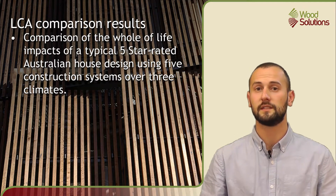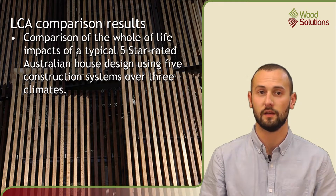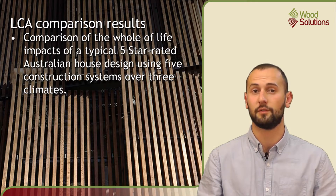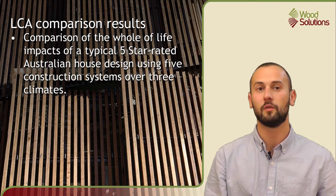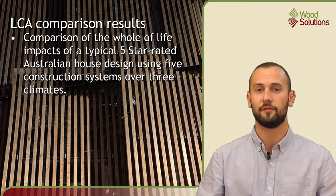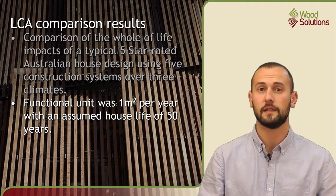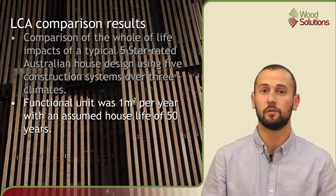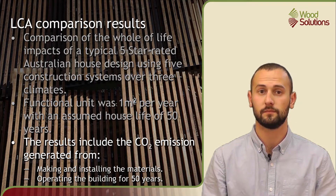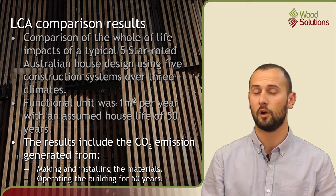Let's now look at two LCA studies and see what they can tell us about the relative performance of timber and other construction systems. The first study was conducted in 2010 and compared the whole-of-life impacts of a typical five-star rated Australian house design using five construction systems over three climates. The construction systems varied from those with very little timber to those that optimised timber use, and the climates studied were Melbourne, Sydney and Brisbane. The functional unit compared was one square metre of floor space per year with an assumed house life of 50 years. As the houses were the same plan, the results were directly comparable, and include CO2 emissions generated from making and installing the materials and operating the building for 50 years. The general result was that the timber-rich solutions had lower greenhouse gas emissions than the solutions that used less timber over the 50 year period of operation.